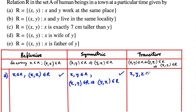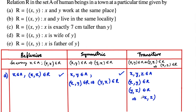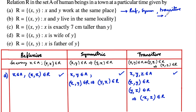Coming to transitive: let us consider three employees x, y, z belonging to set A, such that x and y work at the same place, and y and z work at the same place. This implies that x and z are also working at the same place, that is (x, z) belongs to r. So we can conclude that this relation is reflexive, symmetric, and transitive — hence it is also an equivalence relation.